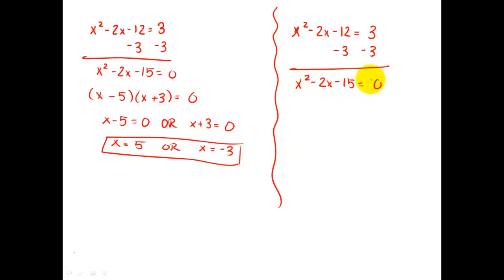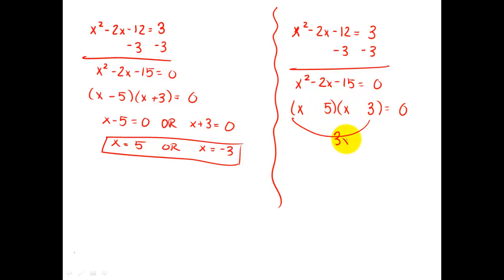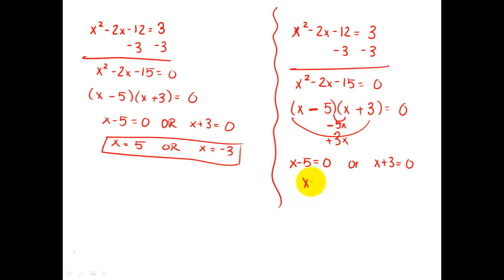That left me with x squared minus 2x minus 15 equals zero. Then I factored this — the first terms have to be x and x. To make 15 I might use a 5 and a 3. My outer term was 3x and my inner was 5x; I wanted negative 2x, so I need negative 5x plus 3x for my middle term. The plus goes with one factor and the negative with the other. Setting each factor equal to zero gives x equals 5 or x equals negative 3.